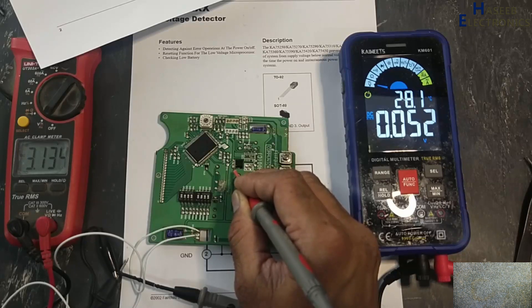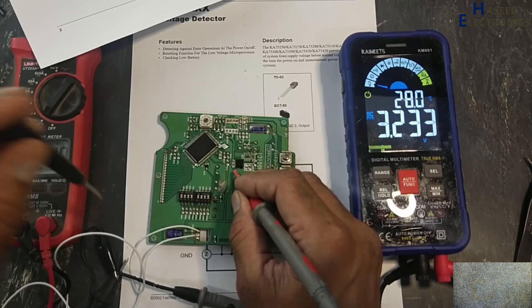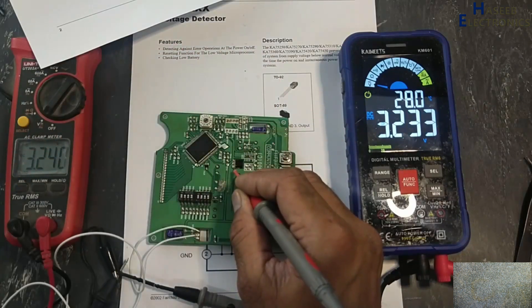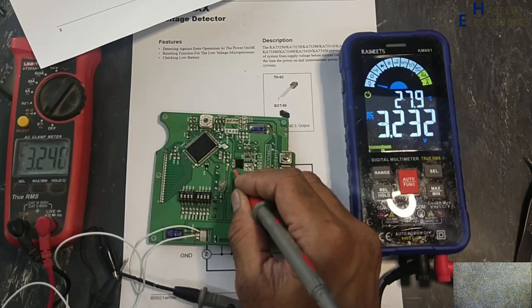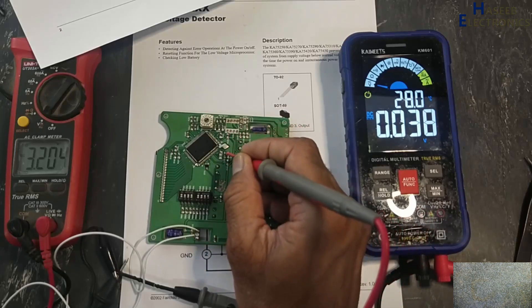3.8 volt. At 3.8 volt, the output is now 3.8 volt. If the voltage will drop then this limit, it will immediately cut off the output. Now let's monitor the reset pin.